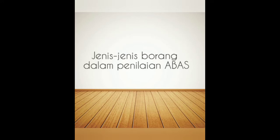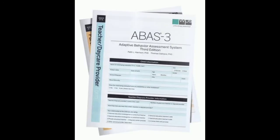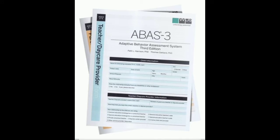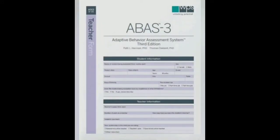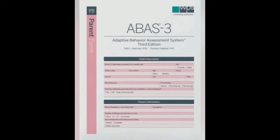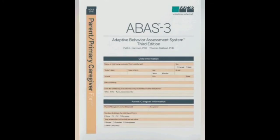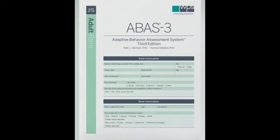Jenis-jenis borang dalam penilaian ABAS yang pertama ialah Teacher atau Day Care Provider Form, Teacher Form, Parent Form, Parent atau Primary Caregiver Form, dan Adaptive Form.